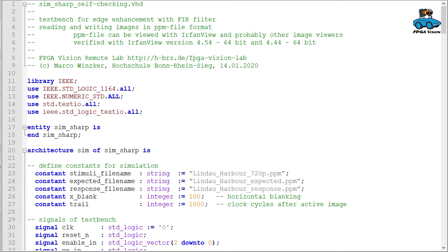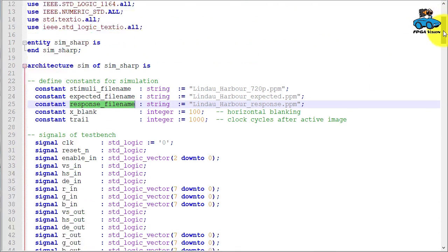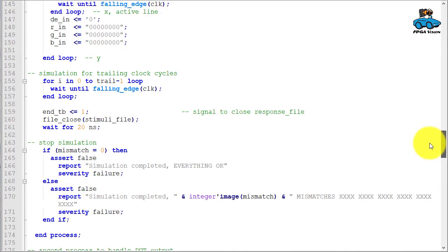And here's the VHDL code for the test bench. It's based on the test bench we had earlier. We now have three files for stimuli, expected result and response. Then we can skip the stimuli process.